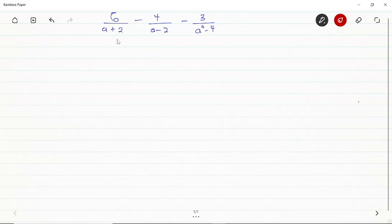So, the a plus 2 and the a minus 2 are all factors of the a squared minus 4 because the a squared minus 4 is the difference of two squares.